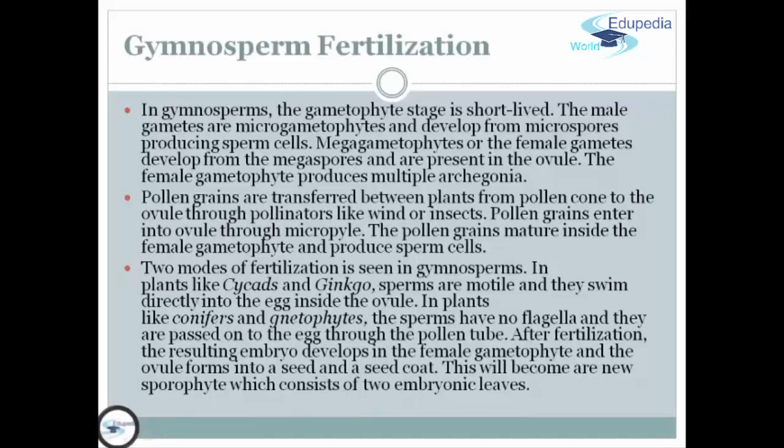In plants like cycads and ginkgo, sperms are motile and they swim directly into the egg inside the ovule. In plants like conifers and gnetophytes, the sperms have no flagella and are passed to the egg through the pollen tube. After fertilization, the resulting embryo develops in the female gametophyte, and the ovule forms into a seed with a seed coat. This will become the new sporophyte, which consists of two embryonic leaves.